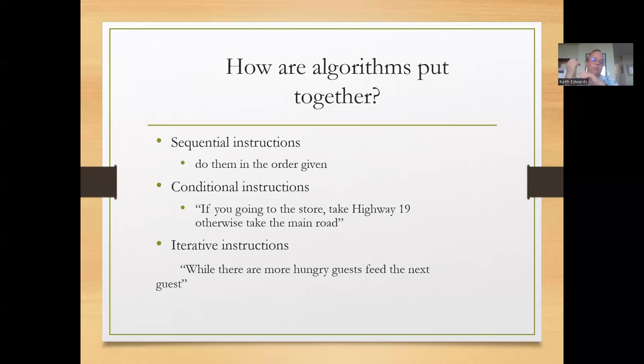Conditional instructions, if you're going to the store, you'll take Highway 19. Otherwise, you can take the main road. Iterative instructions is while there are more hungry guests, feed the next guest. So keep doing something until a terminating condition happens. But these are the three types of statements that we'll come across in our algorithms.